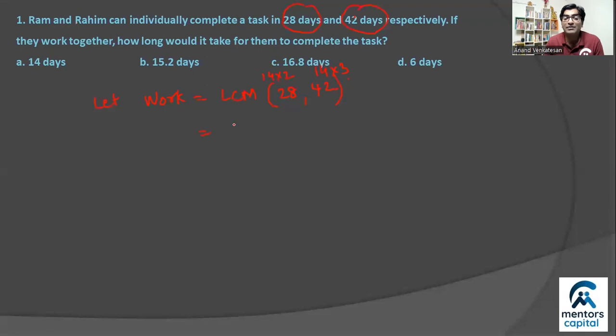So LCM, which is common, is as it is 14. So LCM will be 14 into 6, that is 84 units. So let the work be 84 units.